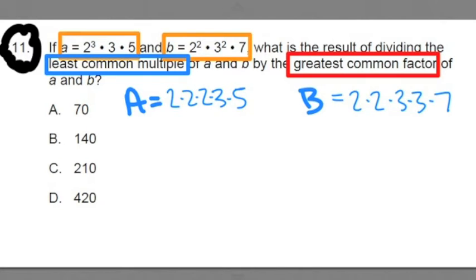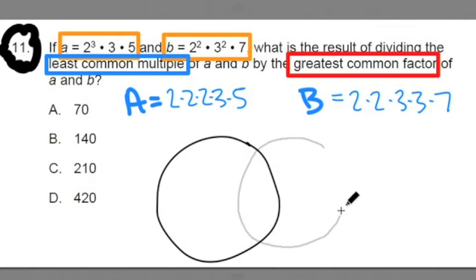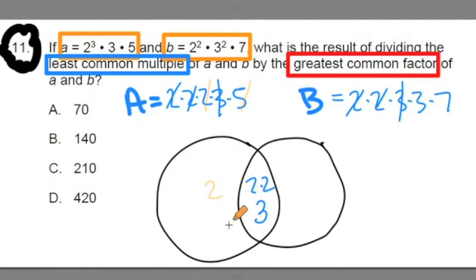I do the Venn diagram just like we did before. Remember the Venn diagram is going to help me identify least common multiple and greatest common factor. I have to identify overlapping multiples. So they both have two 2's. I cross them out, put them in the Venn diagram. They both share a 3, cross one out from each one, put in the Venn diagram. The A has an extra 2 and a 5. Put the 2 in and the 5 in. The B has an extra 3 and 7. Put the 3 in and the 7.